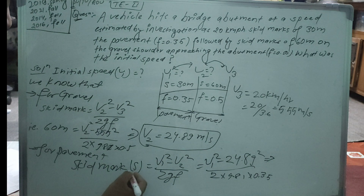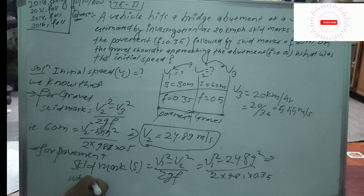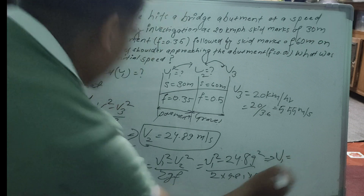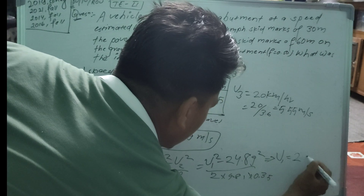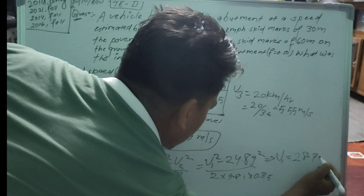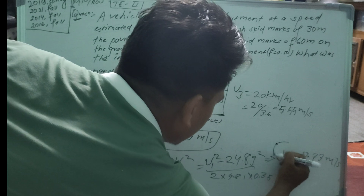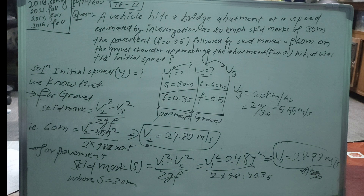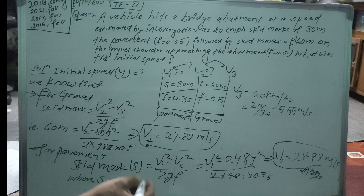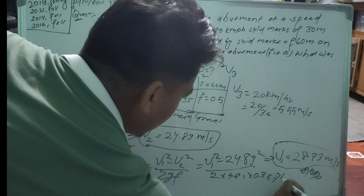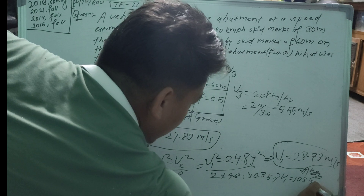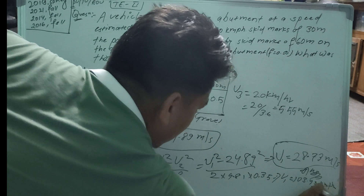Calculating this gives us V1 = 28.73 meters per second. This is the final answer for the initial speed.